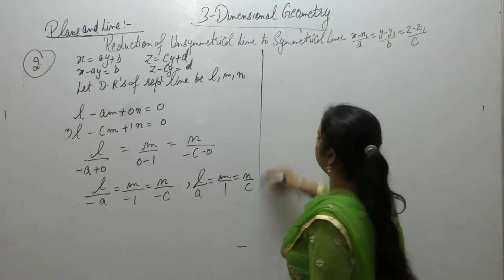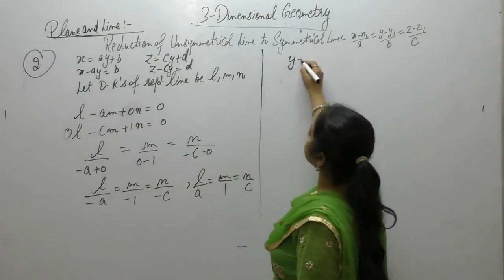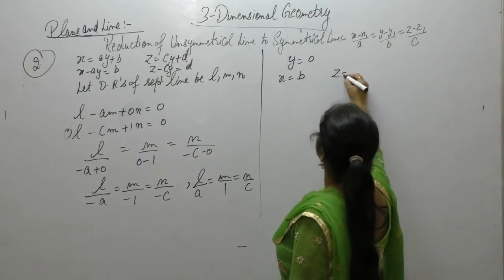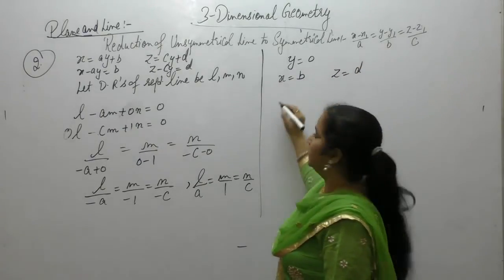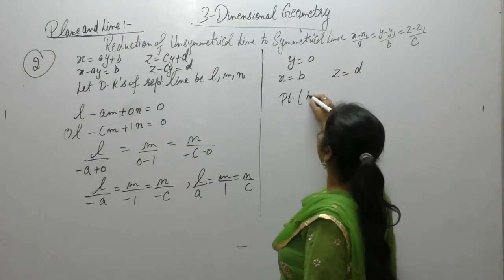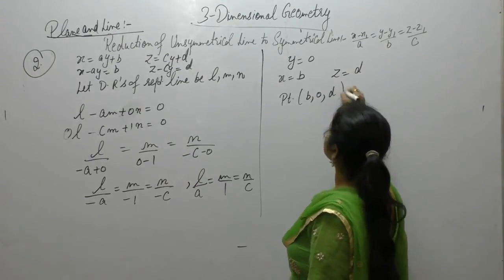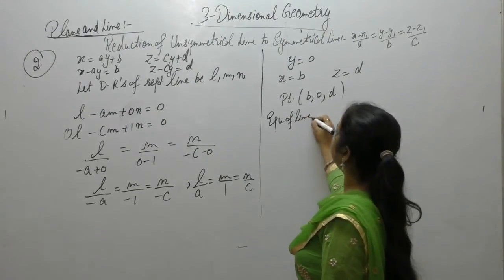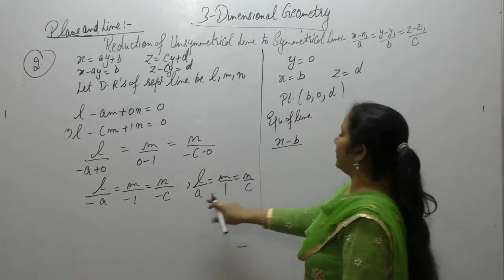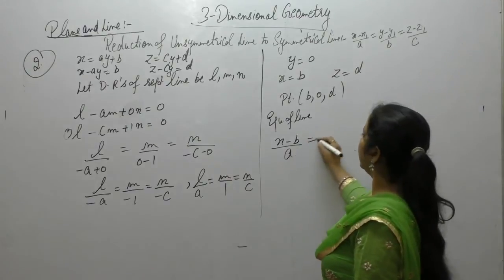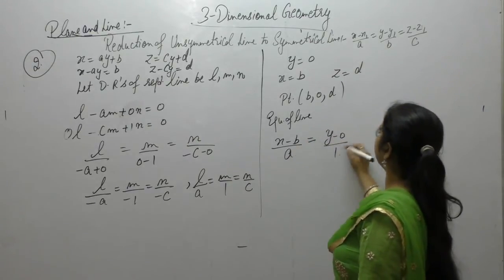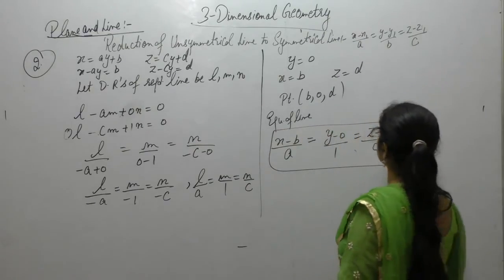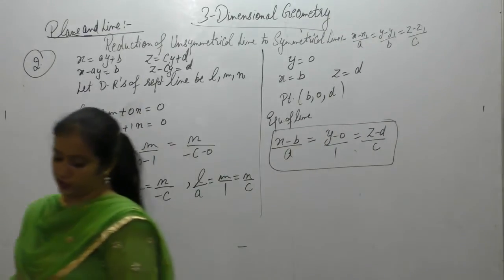Now, to solve the given equation, put Y is equals to 0, so x is equals to B and z is equals to D. So, the point through which line pass B, 0, D. Now, the equation of required line will be x minus x1 upon direction ratio A by minus 5 and upon 1 z minus D upon C. So, this is the required equation for the line.